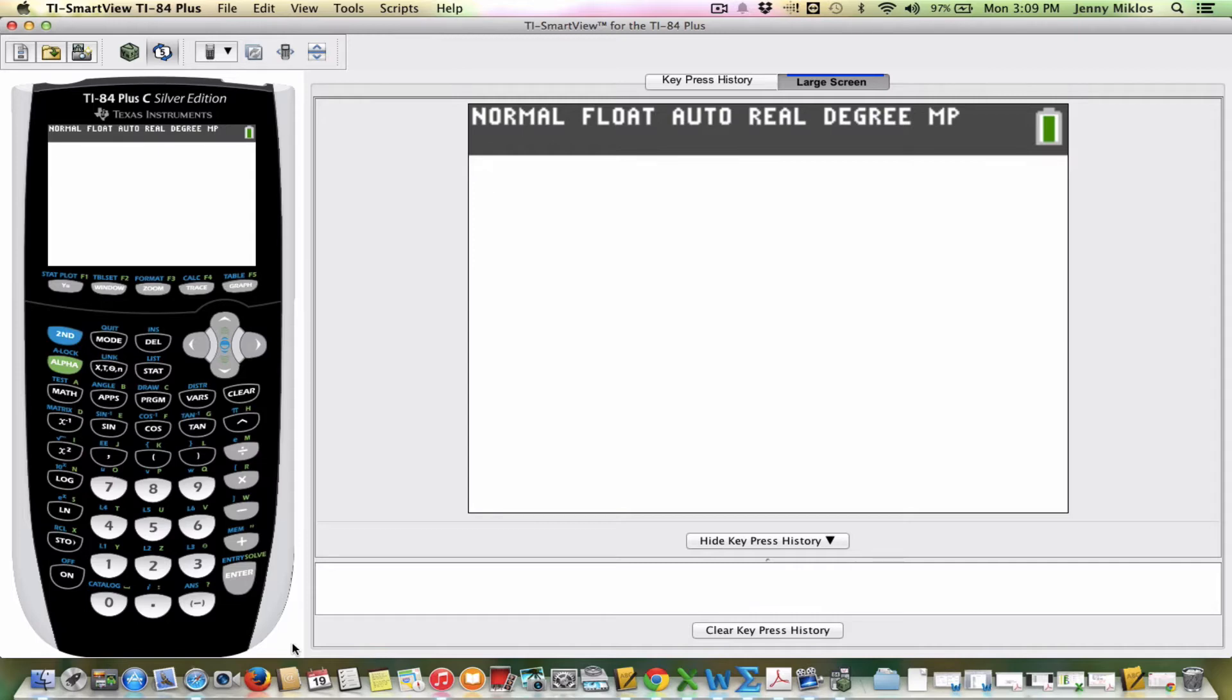But I'm going to walk through the one that is in the directions. So it says, suppose you have two functions, y equals x squared minus 2x minus 4, and y equals x. We can use the calculator to find their point of intersection.